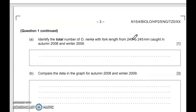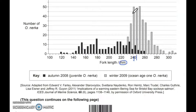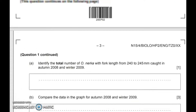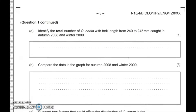Identify the total number of Onika with fork length between 240 to 245 mm in autumn 2008 and winter 2009. So 240 to 245 would be these two bars. Winter 2009 plus autumn 2008 — this one looks like it's 50, and on top of that we have what looks like an 8 or 9; I'm going to say 9. Looking at the units, it's just the total number, not thousands or hundreds. So the answer is 59 total.